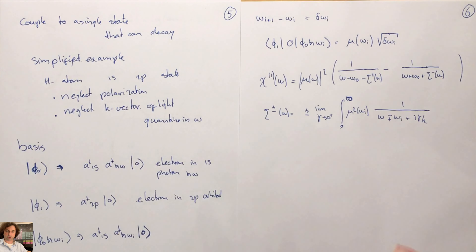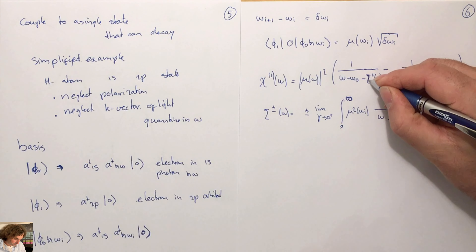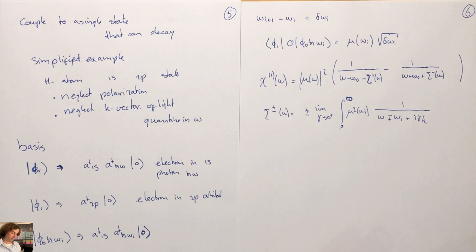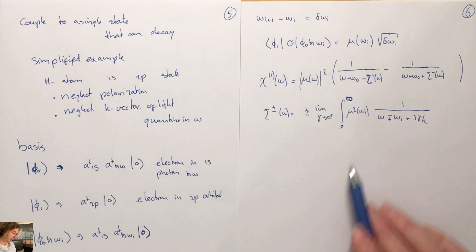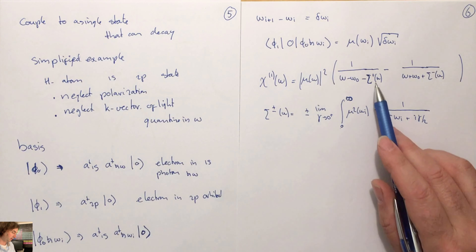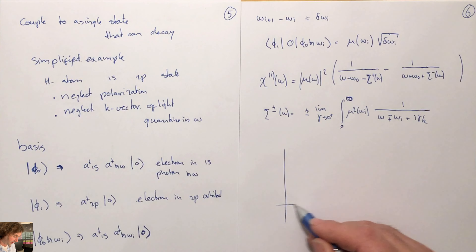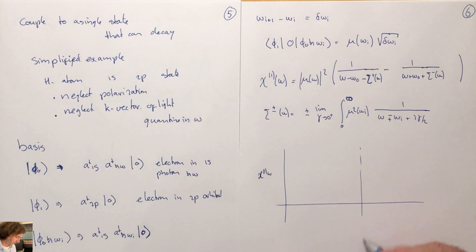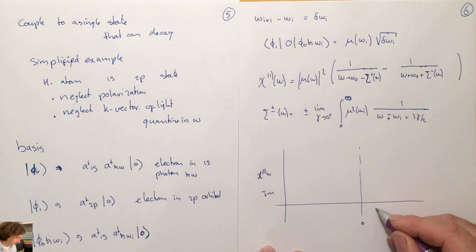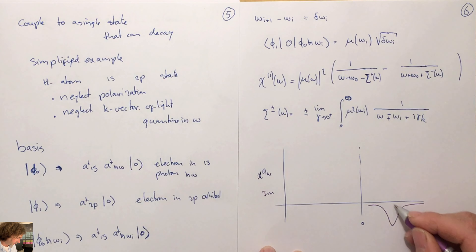All poles must be in the lower half of the complex plane because we want a causal response function. When the coupling constant μ is roughly constant in energy — as it is for the hydrogen atom — the integral gives a Lorentzian imaginary part for χ₁(ω) centered around ω₀, so the conductivity has a real part and you have absorption.